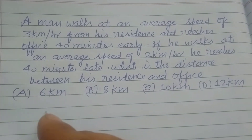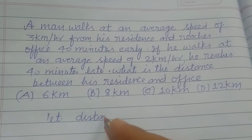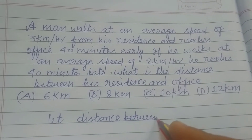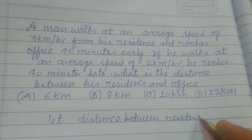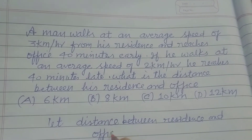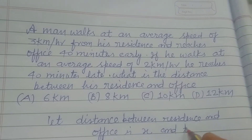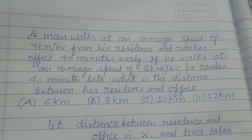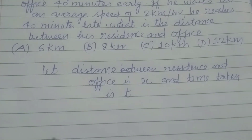Let the distance between residence and office be x, and the time taken be t, when he is moving at normal speed.